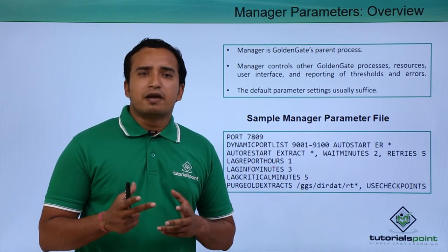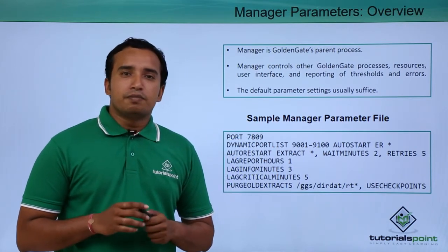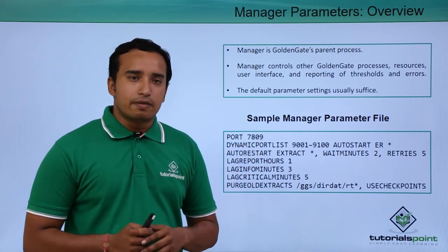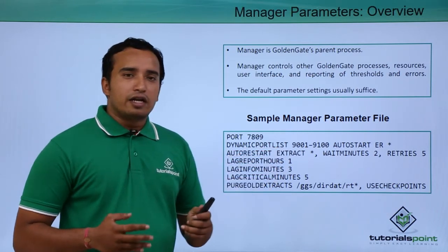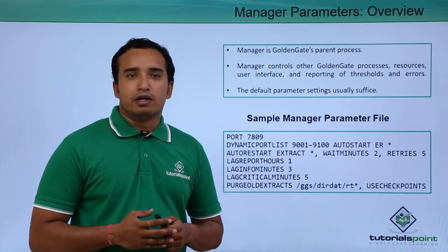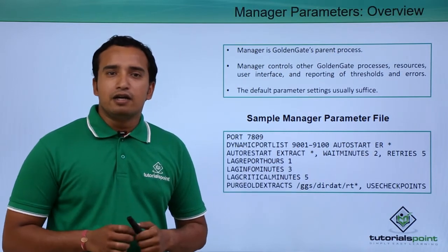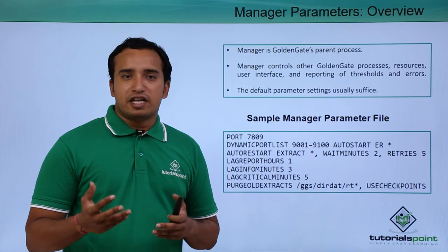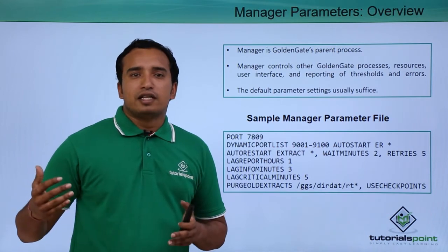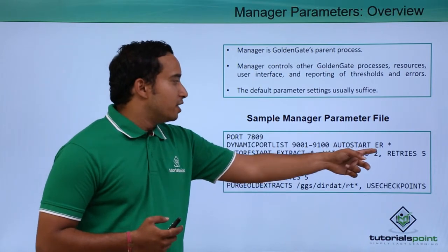Looking at the different parameters for the manager process: first is the port number, which is the port on which the manager process runs — it is 7809 in this example. Next is the dynamic port list, where you can give a dynamic set of ports for GoldenGate to use. Auto restart ER star — ER star is a wildcard — means each time the manager process is started, it will start that process as well.